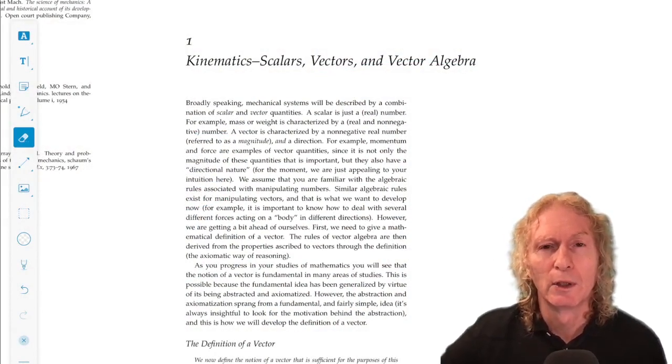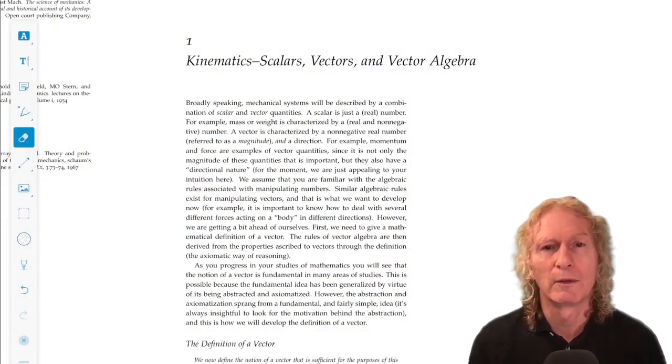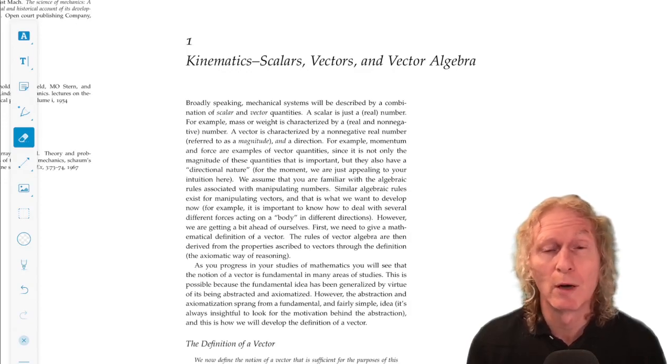Okay, so in mechanics, we have two types of quantities. We have scalars, or just numbers, real numbers for us, positive, negative, or zero, and vectors.